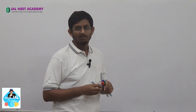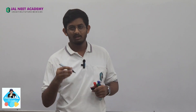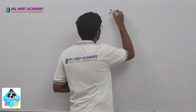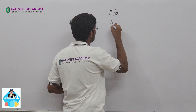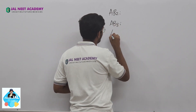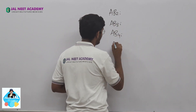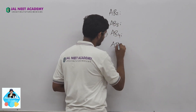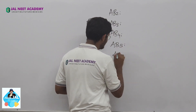Now, if we have one central atom and one bond pair, we look at the AB series. We have AB2, AB3, AB4, AB5, AB6, and AB7 — that is seven series of the set.